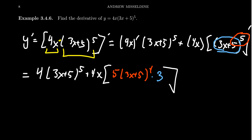So what do we have here? We have 4 times 3x plus 5 to the fifth plus 4x times 5 times 3x plus 5 to the fourth times 3. This is the derivative of the function. Now I should mention, in terms of calculus, we're now done.